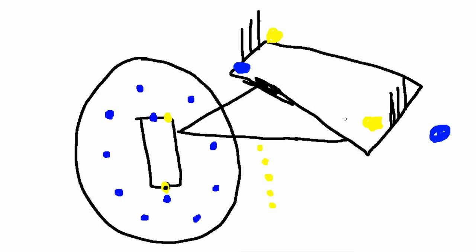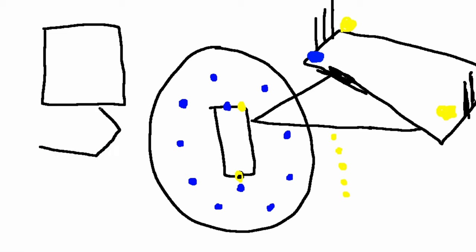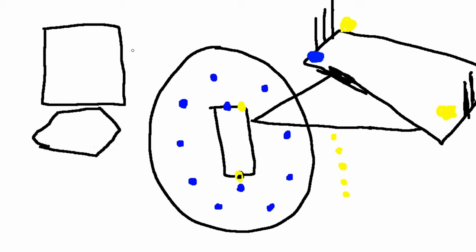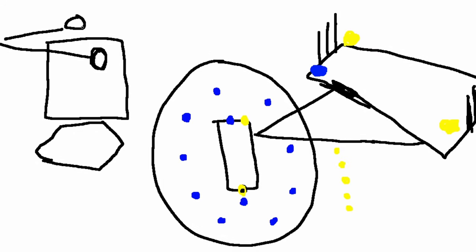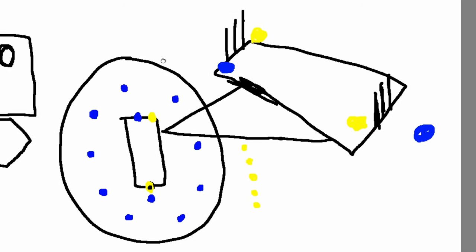Now we'll explain the wickets. There are two pairs of them. In baseball you have the strike zone — above the plate — and if the pitcher throws the ball in the strike zone and you don't swing, it's a strike and counts against you. If it's outside, it's a ball. It's kind of similar in cricket.